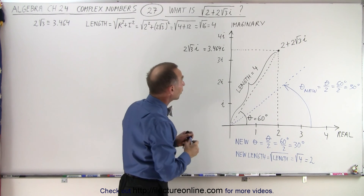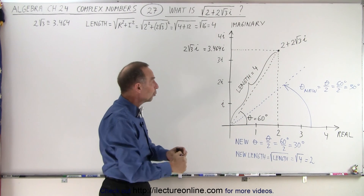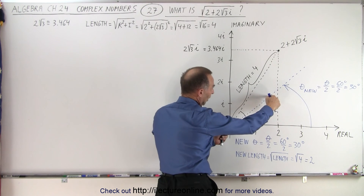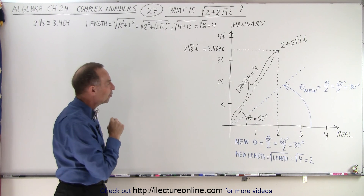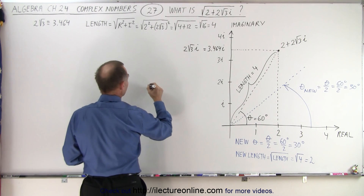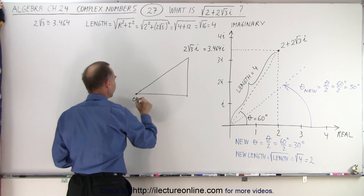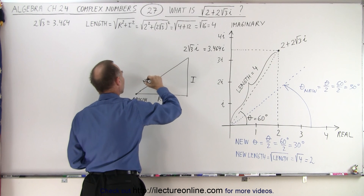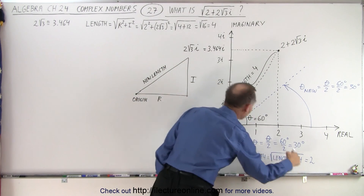That's our new angle. So we know that the square root of our complex number will now be on this line. The position of that point — the new length from the origin — will be the square root of the original length, so it will be 2 units away. Now, how do we find the exact position of that point? The best thing to do is probably to draw the triangle. Here's our little triangle. We know that this represents the origin, this represents the real part, this represents the imaginary part, and this represents the new length, which is equal to 2.